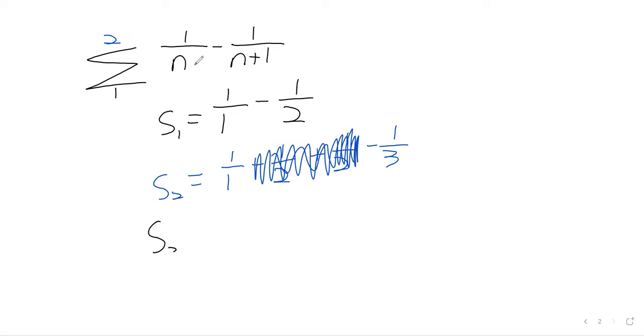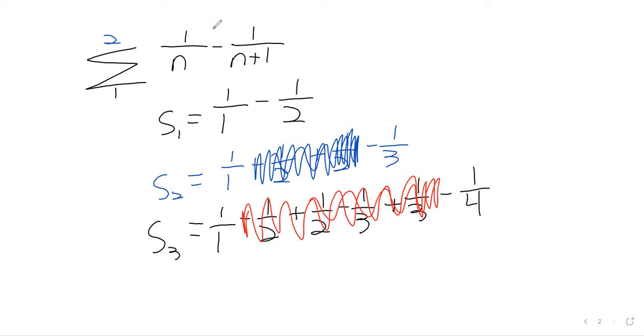S sub three continues this pattern. It gives us a plus one third. It gives us a plus one third and a minus one fourth. And this sum, this telescope collapses. The one half's cancel. And now, the one thirds cancel.